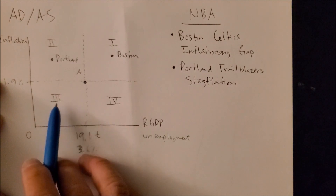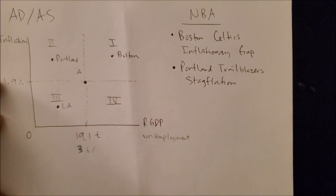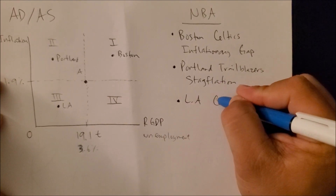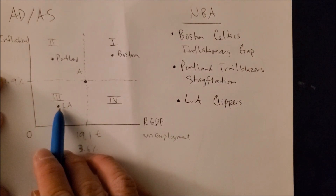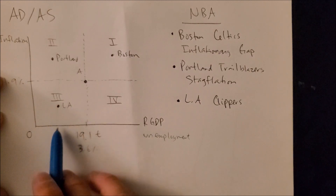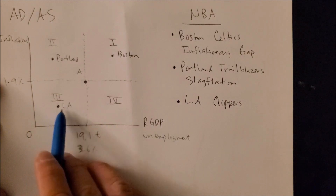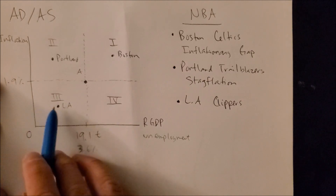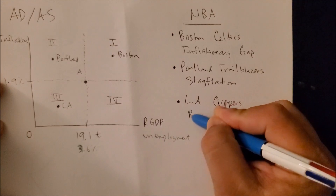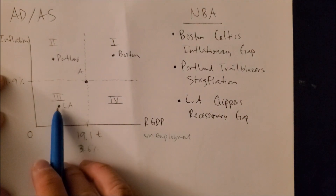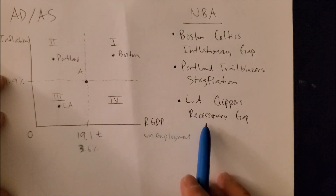Quadrant three is the southwest region — point LA, representing the Los Angeles Clippers. At point LA, growth on the x-axis is also poor and unemployment is high. However, inflation is actually really low, which is good because the purchasing power of each consumer is stronger when inflation is low. The only good thing happening at point LA is low inflation on the y-axis. We call this a recessionary gap — slow growth and high unemployment mean we have a recession.